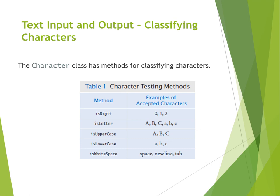Here we see a number of methods in the `Character` class that are very helpful for classifying characters. `isDigit()` gets a character as input and returns true if the character is a digit. `isLetter()` returns true only if the input is a letter, either uppercase or lowercase. `isUpperCase()` returns true only if the input is a capital letter. `isLowerCase()` returns true only if the input is a lowercase letter. `isWhitespace()` returns true only if the input is a space, newline, or tab.